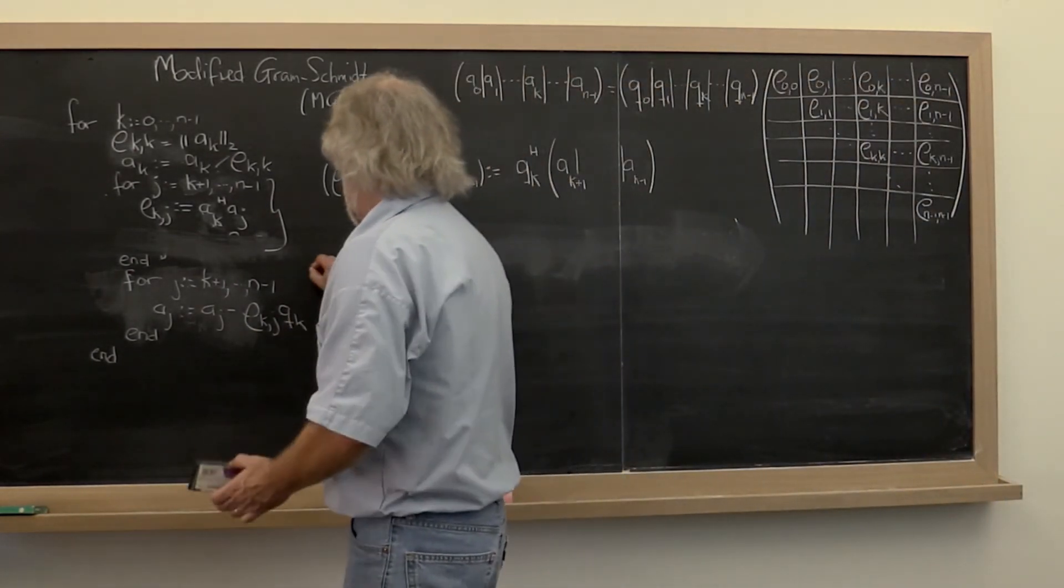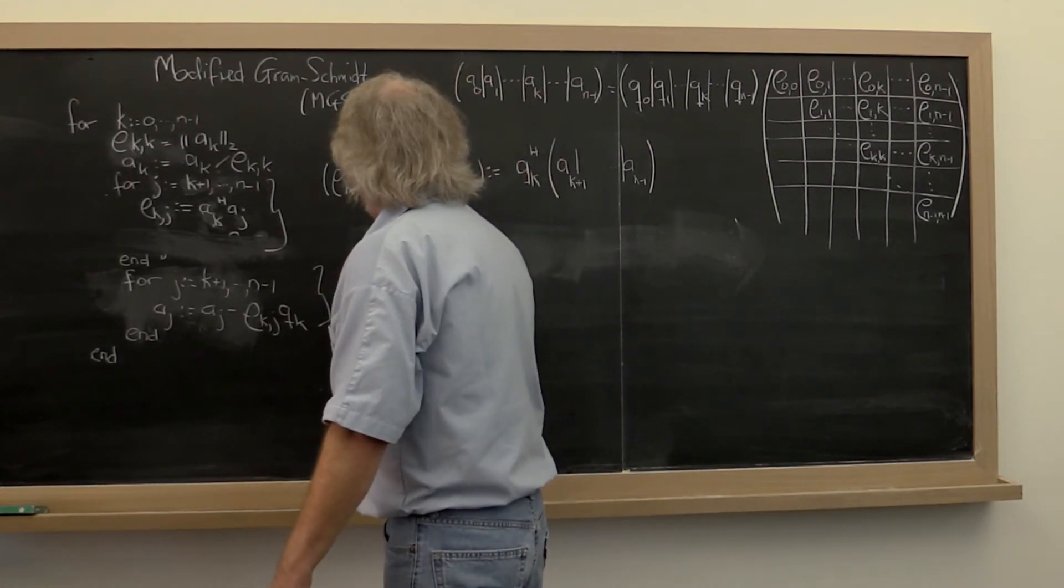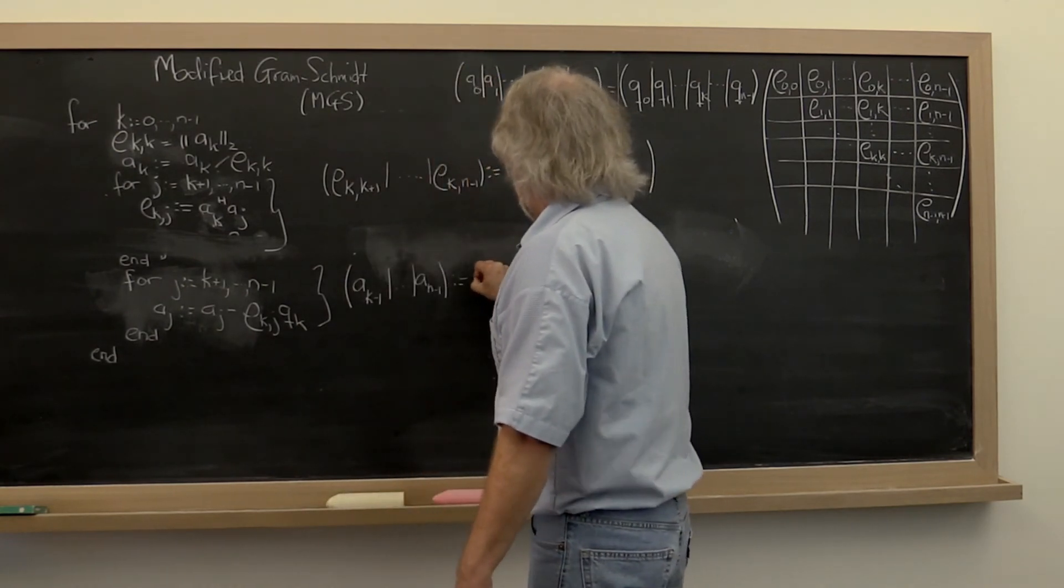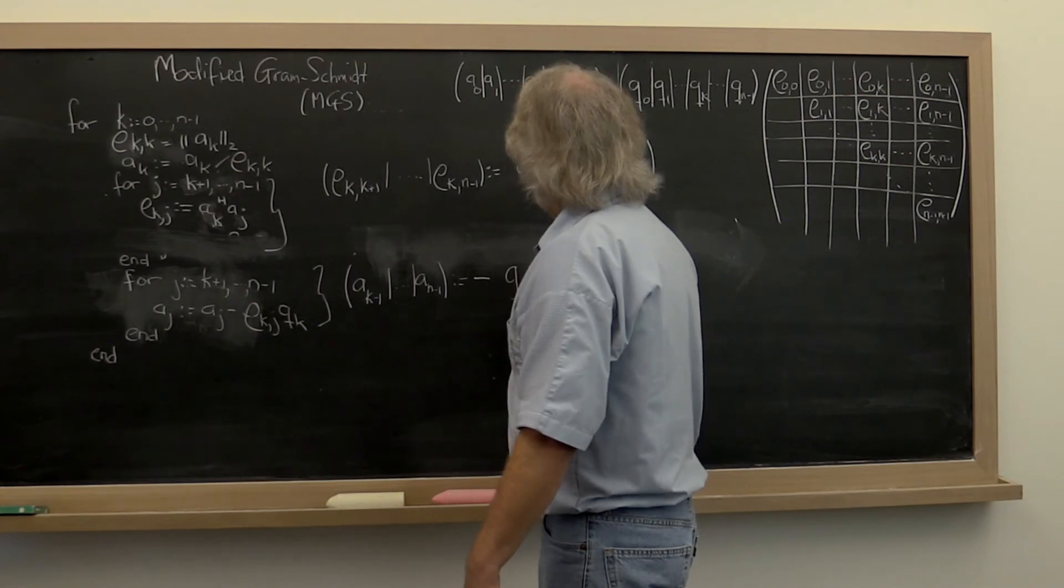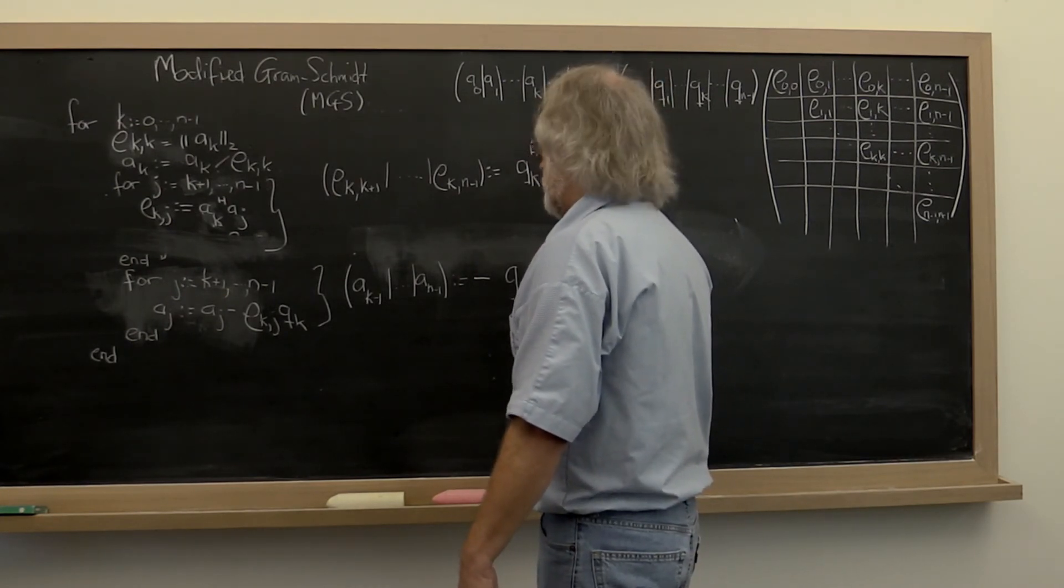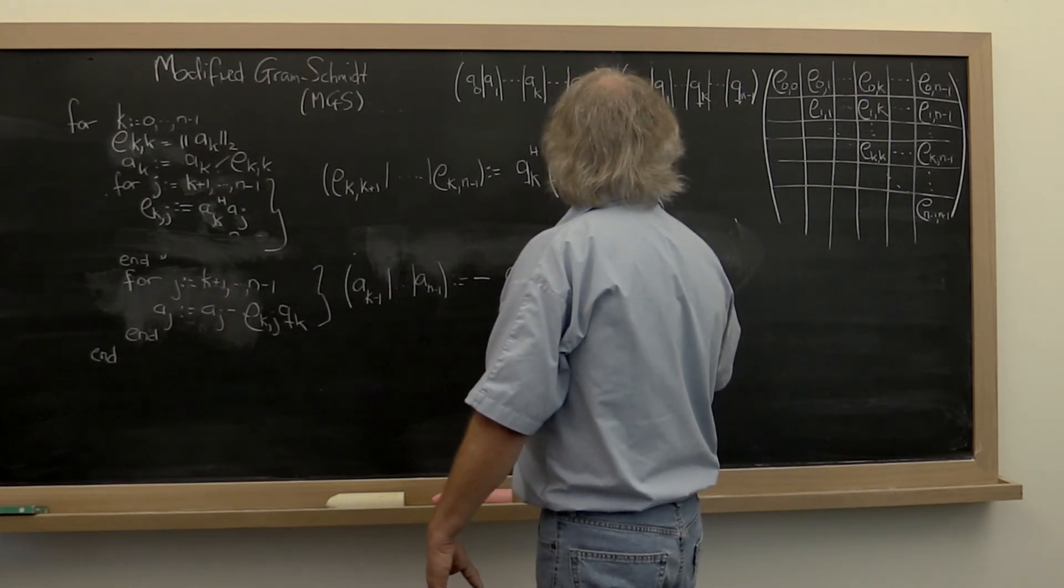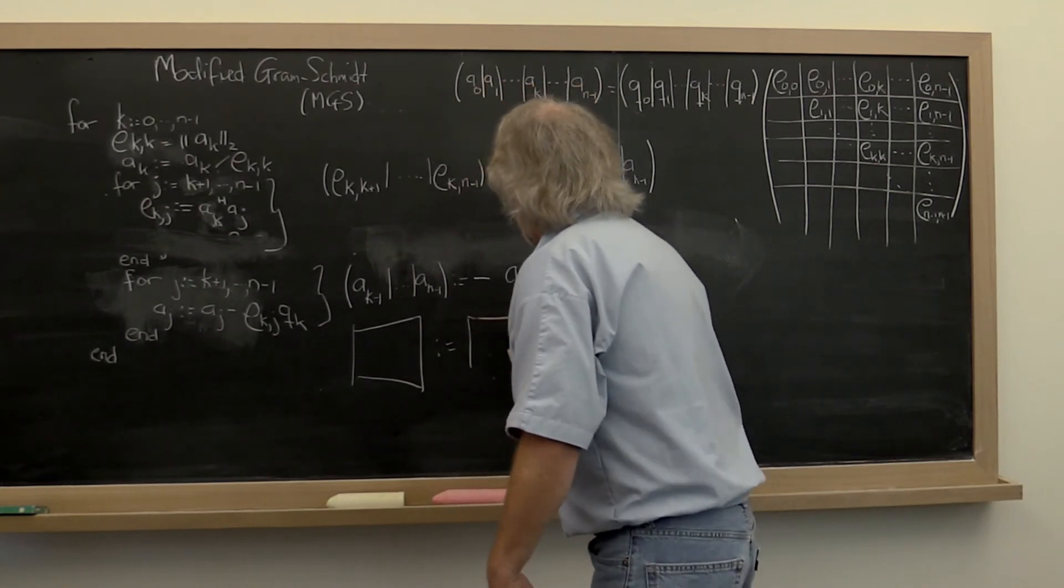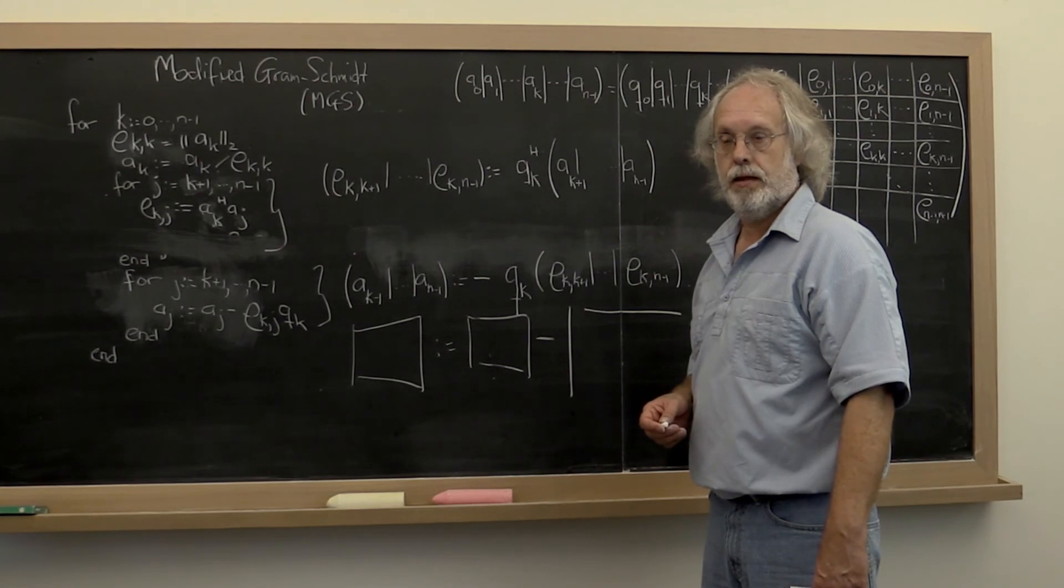And then if you look at this loop right here, this loop can be orchestrated as the updates of all future columns, subtracting off of those columns, which becomes the negative of the kth column in A, but remember that's been overwritten by Q K, times row K plus one through row K N minus one. Now what is that? This here is a matrix being updated by taking that matrix and subtracting off a column vector times a row vector. That's a rank 1 update. That's an operation we've seen before.